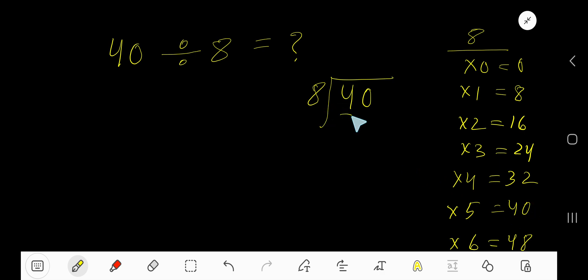For our dividend, since 4 is less than 8, we have 0 times 8, which gives us 0. Subtract, we are getting 4. Bring down the next digit.